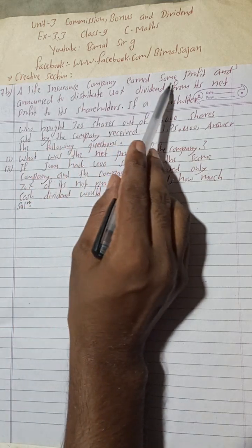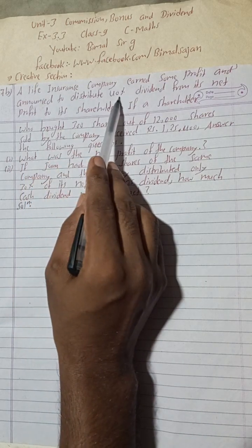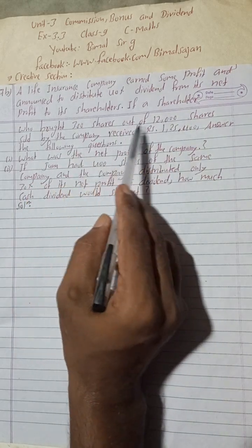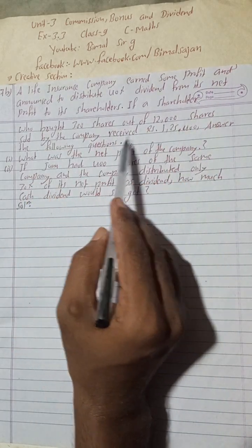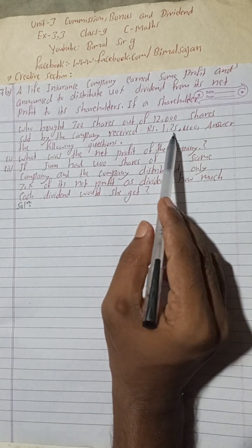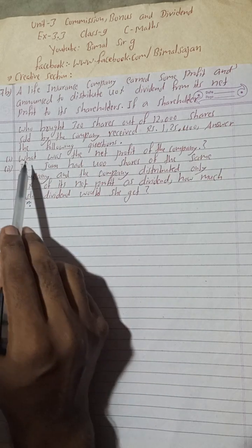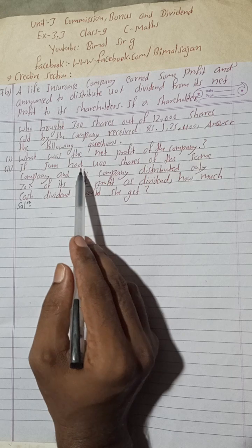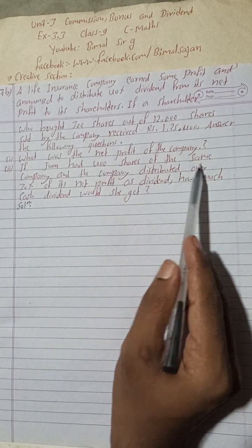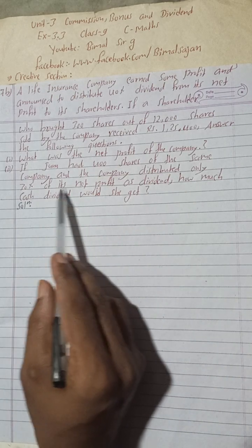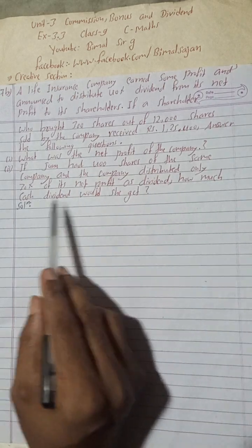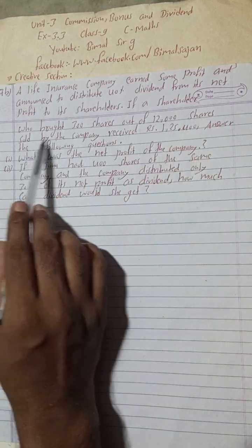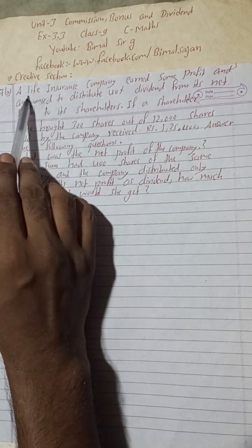A life insurance company earned some profit and announced to distribute 40% dividend from its net profit to its shareholders. A shareholder who bought 300 shares out of 12,000 shares sold by the company received Rs 1,25,400. Answer the following: Number 1 — what was the net profit of the company? Number 2 — if Junnu had 400 shares of the same company and the company distributed only 30% of its net profit as dividend, how much cash dividend would she get?